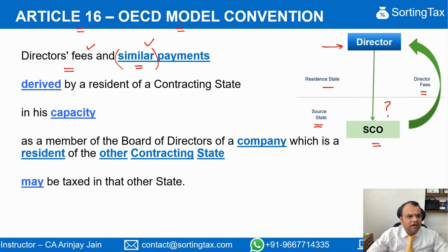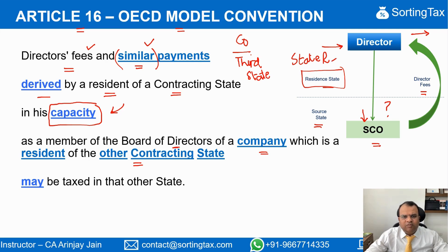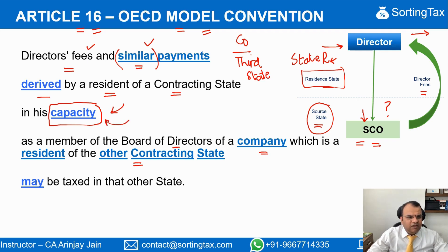These fees are derived by a resident of a contracting state — resident of state R — in his capacity as a member of the board of directors of a company which is a resident of the other contracting state. If the company is a resident of a third state, or is a resident of the same state where this person resides, then this clause will not apply. But if the company where this person is a director is a resident of the source state, and there is a tax treaty between the two states in line with Article 16 of the OECD Model Tax Convention, then such fees received in the capacity of a member of the board are covered.